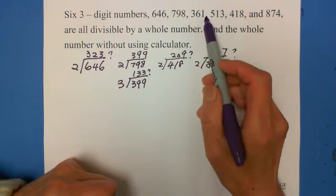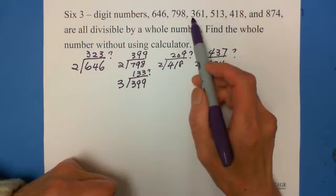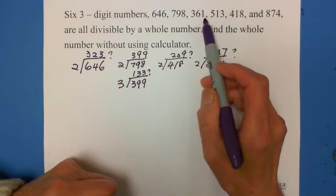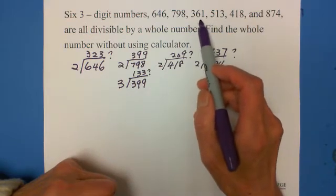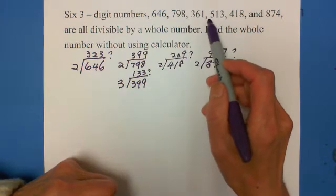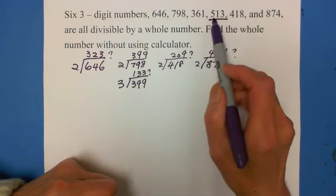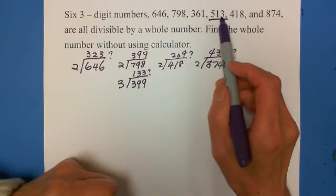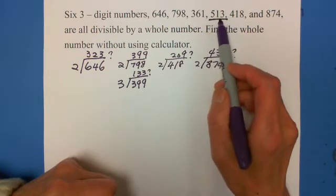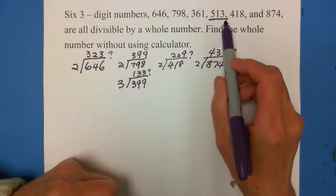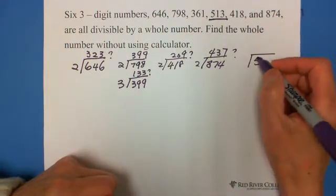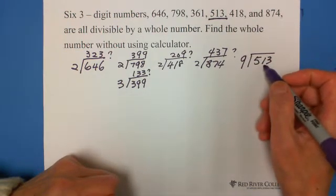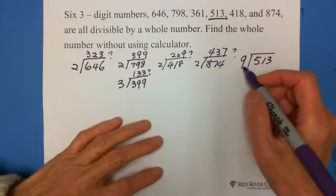This number 361 is an odd number, not divided by 2. Also, 3 plus 6 plus 1 is 10, not divided by 3, 6, 9, or 4. But this number 513 is odd, but they add together equals 9, so it's divided by 9. Let's try this number because 5 plus 1 is 6, plus 3 is 9.